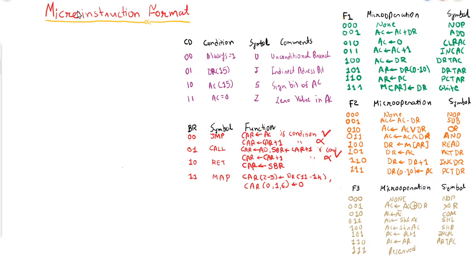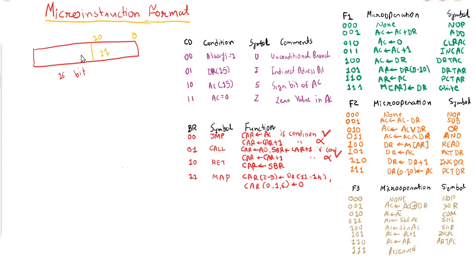Let us assume we have a computer with a 16-bit register. Bit number 0 to 10 — that is 11 bits — are used for address. Bit number 11 to 14 — 4 bits — are used for opcode, and 1 bit is used for the addressing mode.